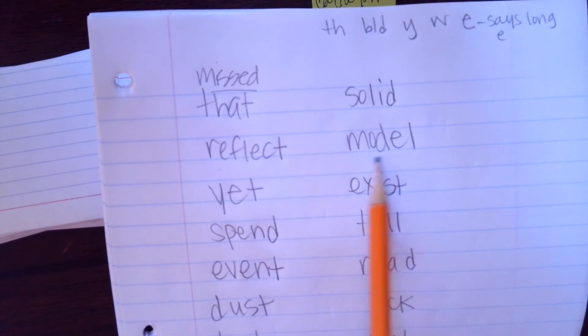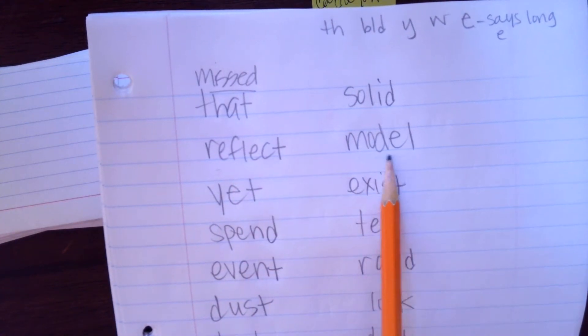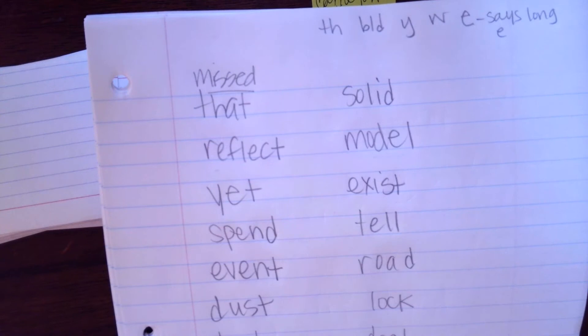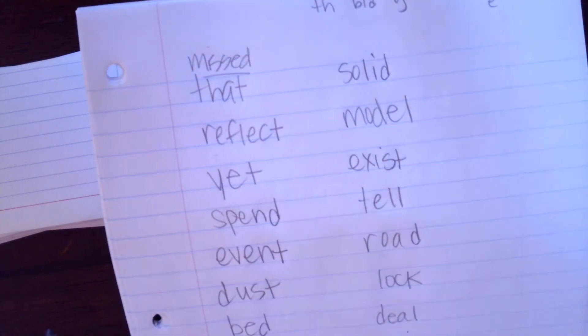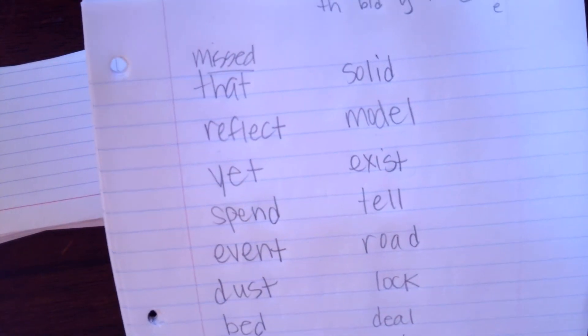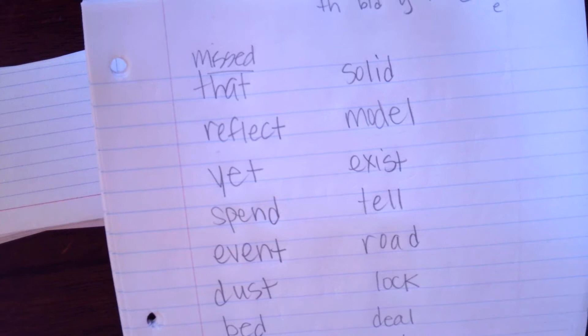No blend: m, a, d, l — model. Y makes ya, E makes e — ya, et — yet.